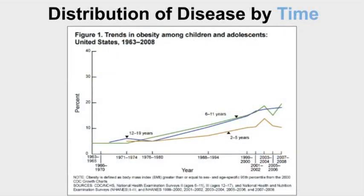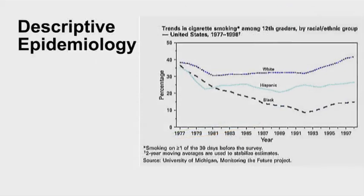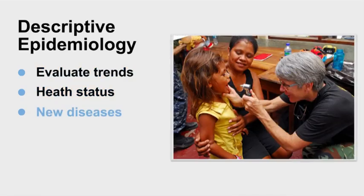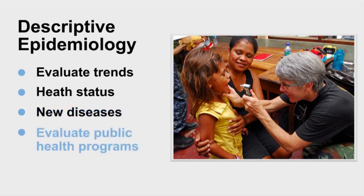This graph is an example of examining the distribution of disease by time. It shows trends in obesity among children and adolescents in the U.S. from 1963 to 2008. Descriptive epidemiology can be used to evaluate trends in disease, health, or risk factors such as smoking, determine if a health status is improving or getting worse, and provide a factual basis for evaluating public health programs and services to determine if existing programs are effective or if new programs should be developed.